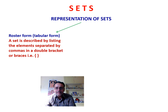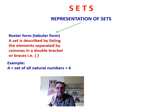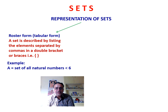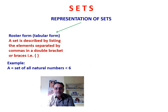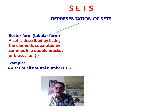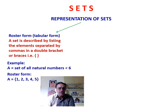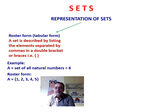For example, take the set of all natural numbers less than 6. In roster form, this would be written as 1, 2, 3, 4, 5 within braces.